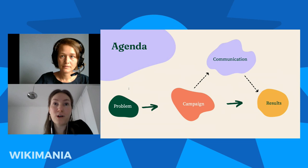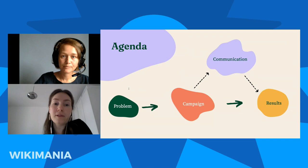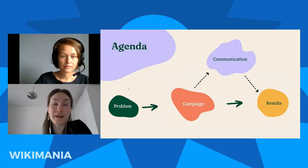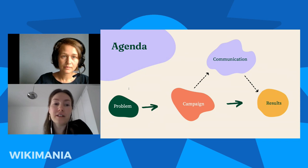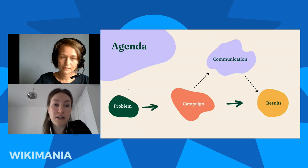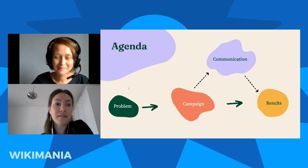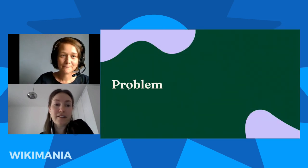We'd like to talk about how we try to overcome this challenge. First, we'll talk about the problem we've been encountering, then how we planned to solve it — spoiler: it was through a campaign. We'll also talk about how communication played a role, and then we'll look at the results. There will be time for questions later, so put them in the chat and we'll go through them at the end.